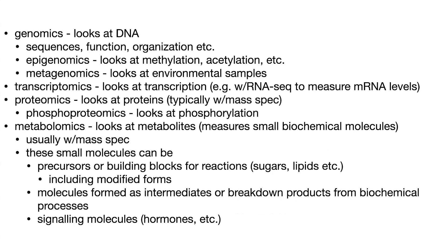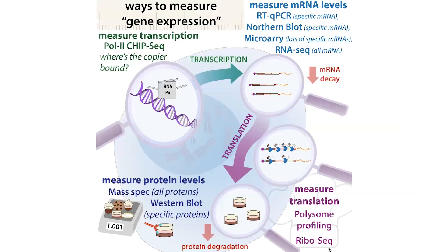You can put this omics suffix on a bunch of different prefixes to basically say, okay, we're going to look at this at a large scale to characterize what's going on. So often these have to do with measuring gene expression. Basically, we've talked about various ways you could measure gene expression. You start with the gene, which is the DNA version of a protein recipe in a lot of cases. You can start with just: what's the sequence of that gene? If you're doing that, you'd be doing something like genomics.